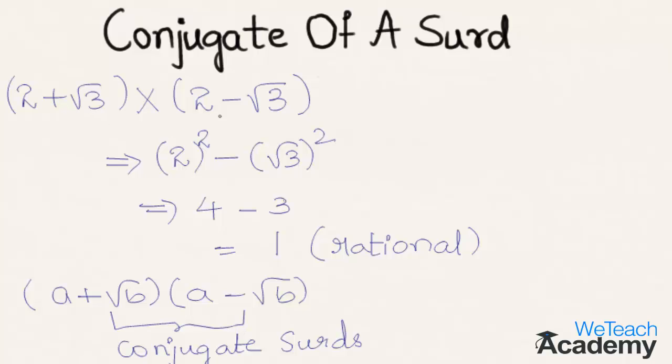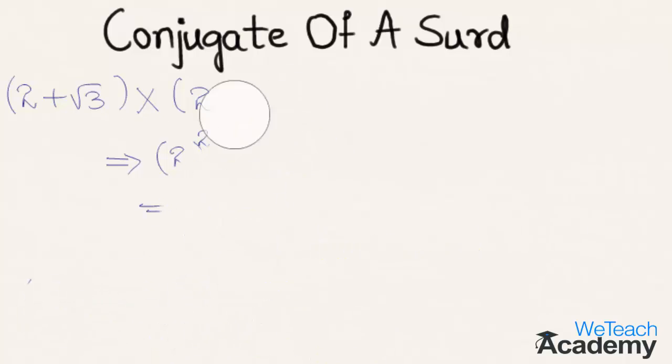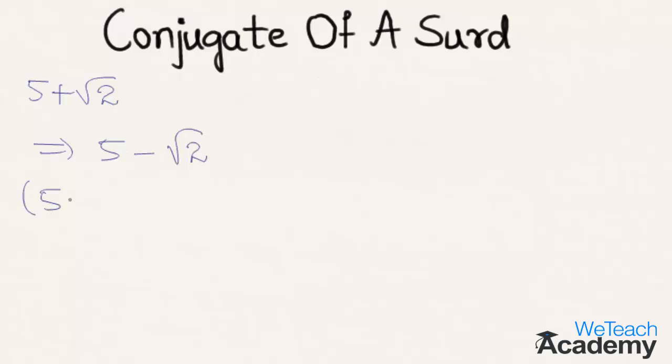Similarly we can say that 2 plus root 3 and 2 minus root 3 are conjugate surds. For example, 5 plus root 2, the conjugate surd of 5 plus root 2 is 5 minus root 2. Now let us check whether these surds are conjugate to each other by multiplying them.